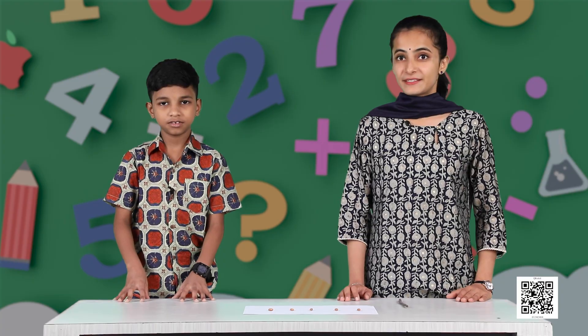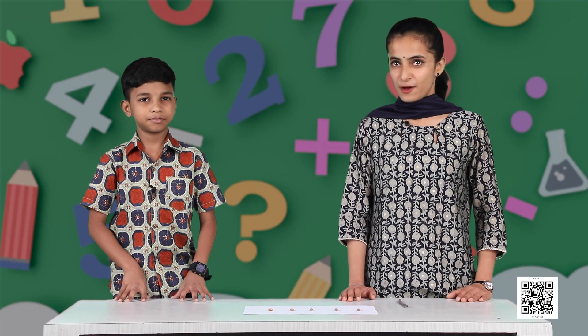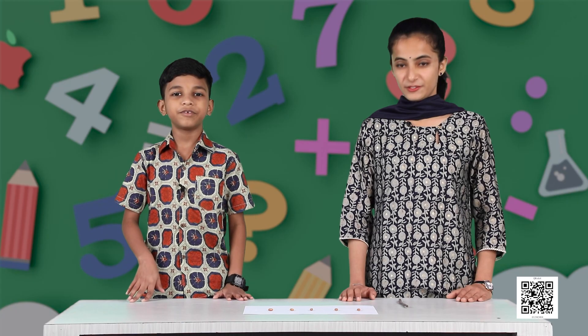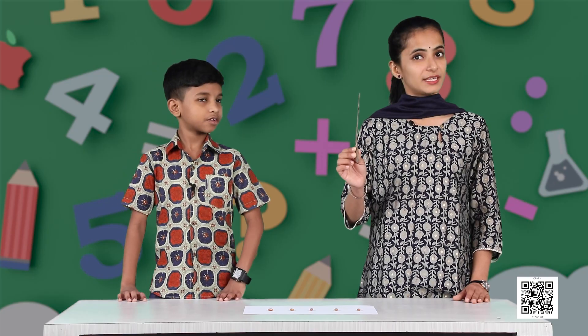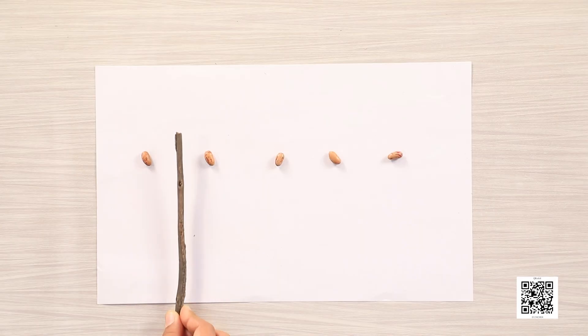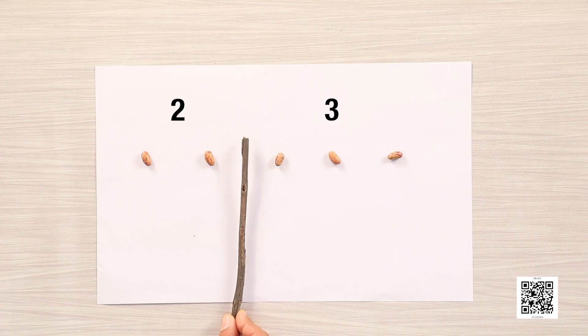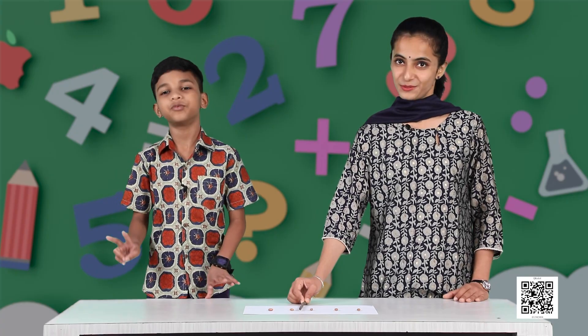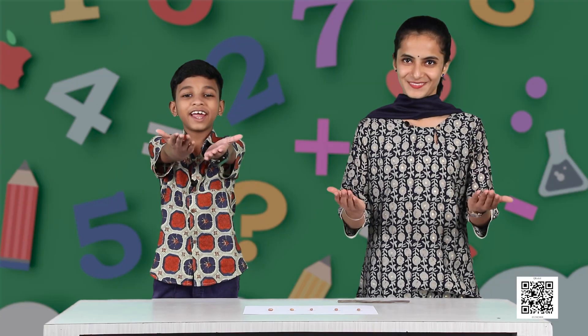Now we have another activity. We will explore the number five in a different way. Let us look at the rajma seeds — how many do we have? One, two, three, four, five. We have five rajma seeds. Now I will separate them using a stick and you have to tell me which numbers are making five. Here: one and four. And now: two and three. And now: three and two. The remaining parts will be done by our friends.